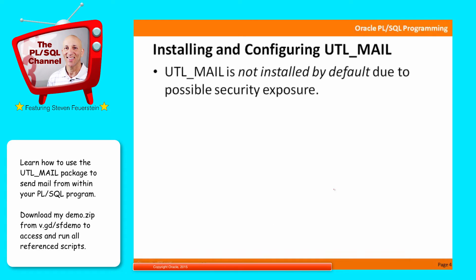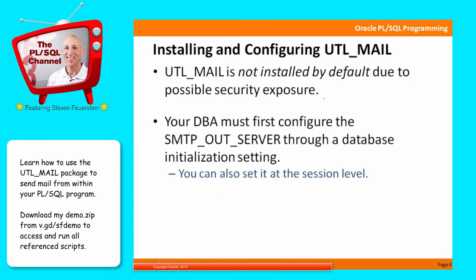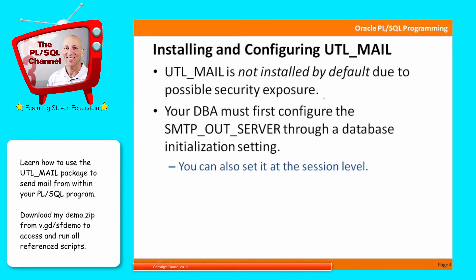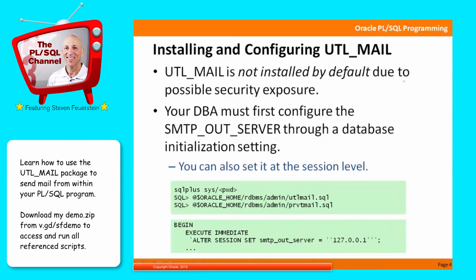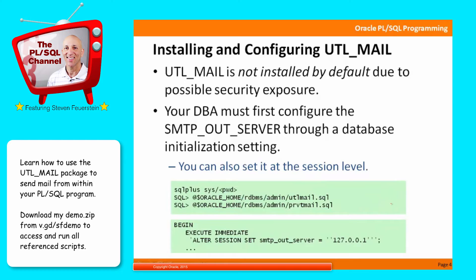First of all, UTL_MAIL is not installed by default due to possible security exposures. The DBA has to explicitly go to the trouble of installing UTL_MAIL and making it available. The DBA must also configure the smtp_out_server initialization parameter. If UTL_MAIL hasn't been installed yet, these files contain the information that will install the UTL_MAIL package specification and body. Here's an example of setting the smtp_out_server parameter in one's session.